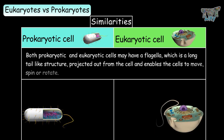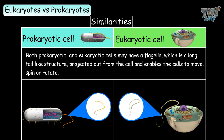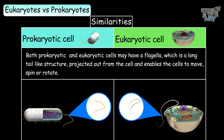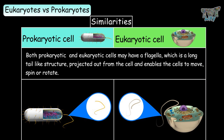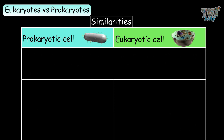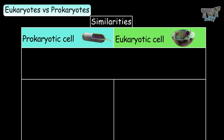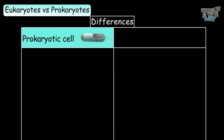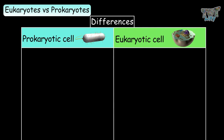Both prokaryotic and eukaryotic cells may have a flagellum, which is a long tail-like structure projected out from the cell that enables it to move, spin, or rotate. Now that we have covered the similarities, we will learn the differences between prokaryotic and eukaryotic cells.